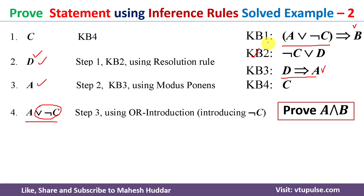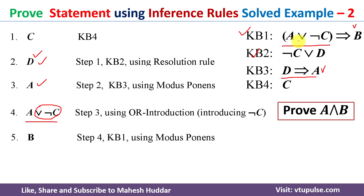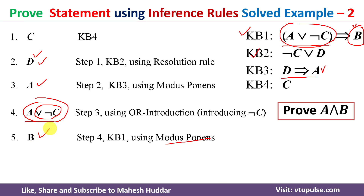A ∨ ¬C from the fourth step exactly matches the premise in knowledge base 1. Applying modus ponens between these two gives us B.